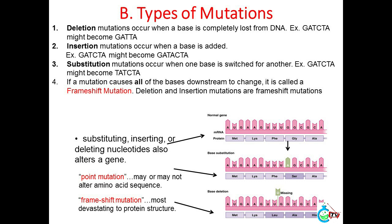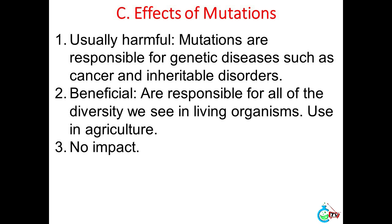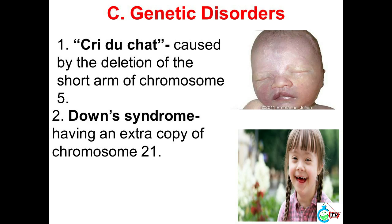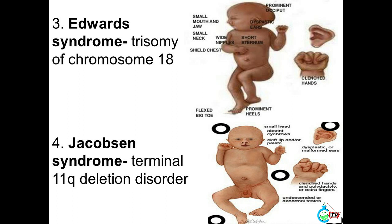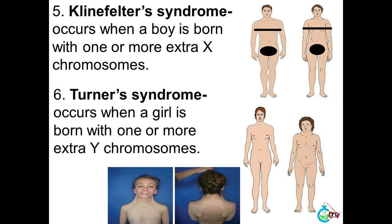C. Effects of mutations: Usually harmful — mutations are responsible for genetic diseases such as cancer and inheritable disorders. Beneficial — responsible for all of the diversity we see in living organisms; also used in agriculture. Some have no impact. C. Genetic disorders: (1) Cri du Chat — caused by deletion of the short arm of chromosome 5. (2) Down syndrome — having an extra copy of chromosome 21. (3) Edwards syndrome — trisomy of chromosome 18. (4) Jacobsen syndrome — terminal 11q deletion disorder. (5) Klinefelter's syndrome — occurs when a boy is born with one or more extra X chromosomes. (6) Turner's syndrome — occurs when a girl is born with only one X chromosome.